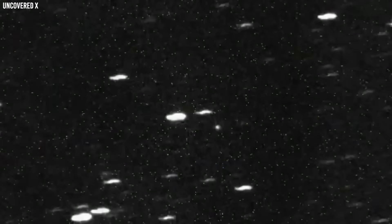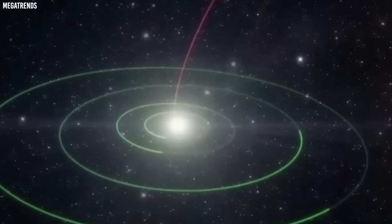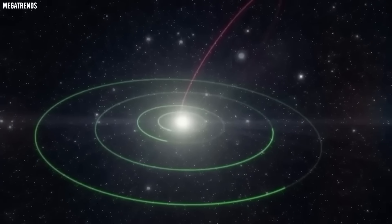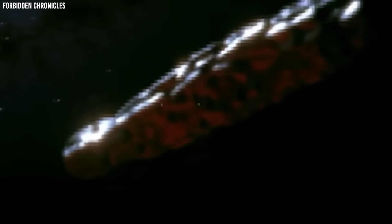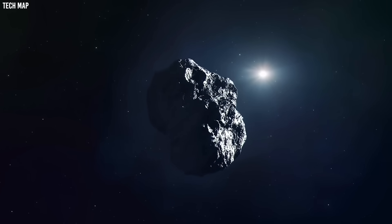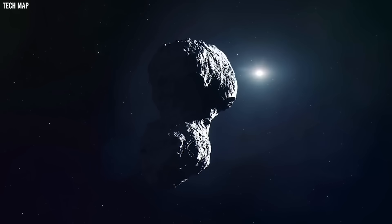SWAN passed its closest point to the Sun on September 12th, which means it's already survived the most dangerous part of its journey. Now it's heading our way, and it should reach its closest approach to Earth around October 20th. At that point, it will be about 24 million miles away, which sounds like a lot but is actually pretty close in space terms.